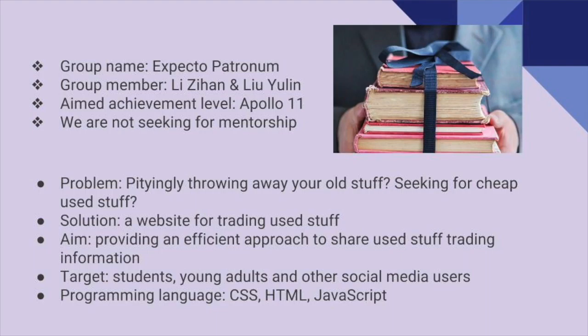Our group name is Expecto Patronum, and our group members are Zihan and Yuli. Our aimed achievement level is Apollo 11. We found that some students want their old stuff to be reused, and some want to buy cheap second-hand items. So we decided to create a website to help them. Our target users are students, young adults, and other social media users. We plan to create this website using CSS, HTML, and JavaScript.